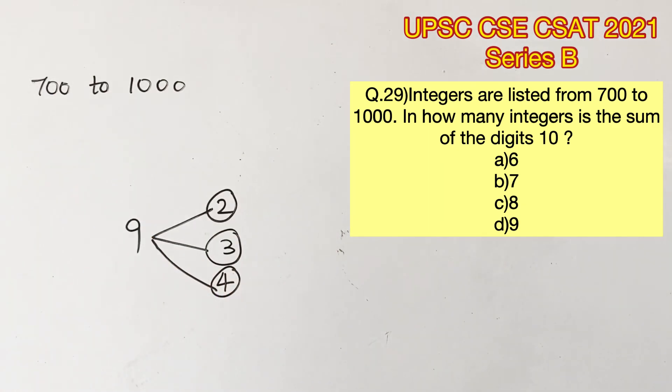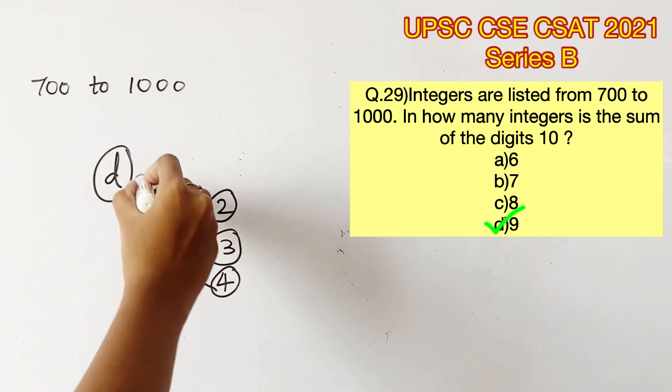Adding all these up, 2 plus 3 plus 4 would give us 9. Therefore, option D is the right answer.